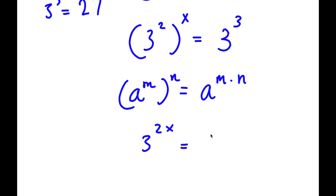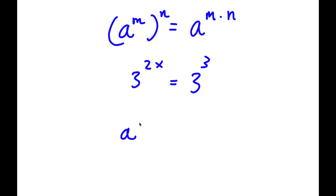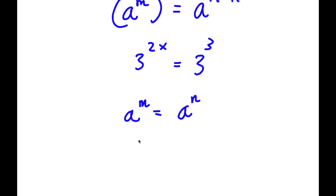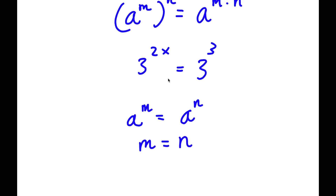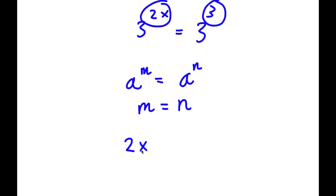And this is equal to 3 to the power of 3. Now, if I have something in the form a to the power of m is equal to a to the power of n, this means that m is equal to n. So in this case, these two exponents equal each other, so 2x is equal to 3.